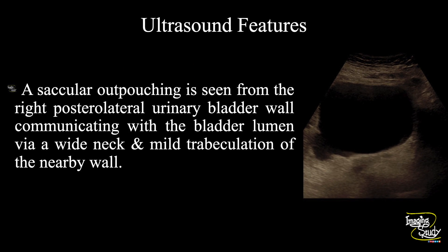So in summary, a circular outpouching is seen from the right posterolateral urinary bladder wall communicating with the bladder lumen via a wide neck, with mild trabeculation of the nearby wall, indicating a case of urinary bladder diverticulum with adjacent inflammatory change.